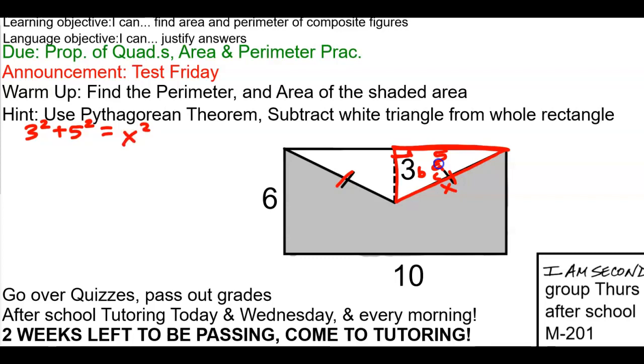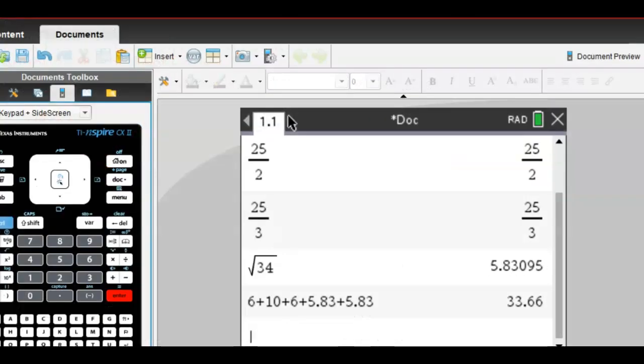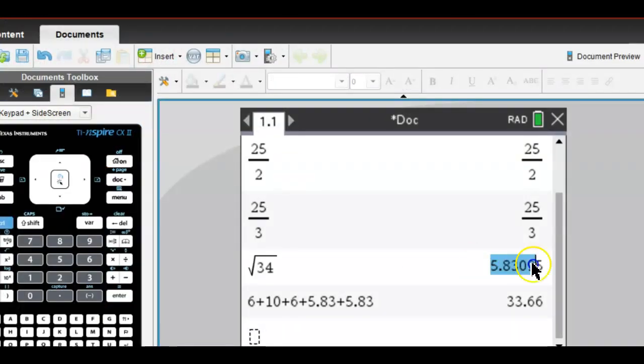Can you use Pythagorean to figure out that missing side length? So 3 squared is 9, 5 squared is 25, 9 plus 25 is 34. Now 34 is not the missing side, that's X squared. How do I get rid of the squared? Square root, right? So the square root of 34 is 5.83.